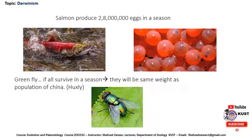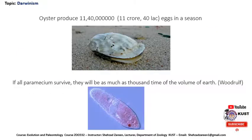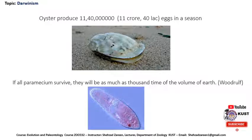Salmon is a fish which can produce 2 crore 80 lakh eggs in a single season. Another example of prodigality of nature is the green fly. It is estimated by Huxley that if all green flies survived in a single season, they would weigh the same as the population of China. Similarly, an oyster can produce 11 crore 40 lakh eggs in a single season. Woodrow estimated that if all paramecium survived, they would amount to 1000 times the volume of the earth.